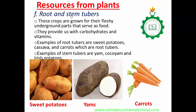Root and stem tubers are also resources gotten from plants. These crops are grown for their fleshy underground parts and are served as food. They provide us with carbohydrates and vitamins. Examples of root tubers are sweet potatoes, cassava, and carrots. Examples of stem tubers are yam, cocoyam, and Irish potatoes. They are grown for their fleshy underground parts, which are harvested underground.